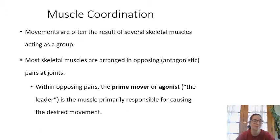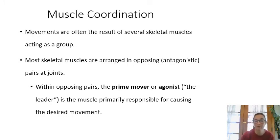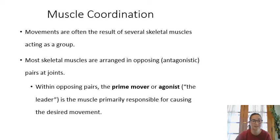Most movements involve more than just one muscle. You have roughly 400 to 600 muscles in your body — I'm not going to make you memorize them all, but we need to know the big ones. A lot of muscles work in groups, and when they do, we usually have a prime mover, sometimes called the agonist — that's the lead muscle for a given job. Along with the prime mover there are usually some helper muscles that assist in executing that movement.